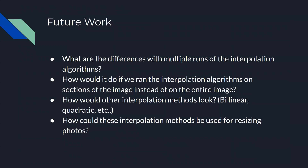For future work on this project, we could run multiple passes of the interpolation algorithms on the same image. As discussed earlier with the cubic spline method leaving those black holes, if we ran it again and again we could eventually bring that definition back and fill in those missing blocks. Another thing we could work on is running the algorithm over a subsection of the image instead of the entire image as a whole. We could also look at different interpolation methods such as bilinear, quadratic, or others, and look at how this could be used for resizing photos — for example, going from a 200 by 200 pixel image to something much larger like 500 by 500 to fill in those extra pixels.